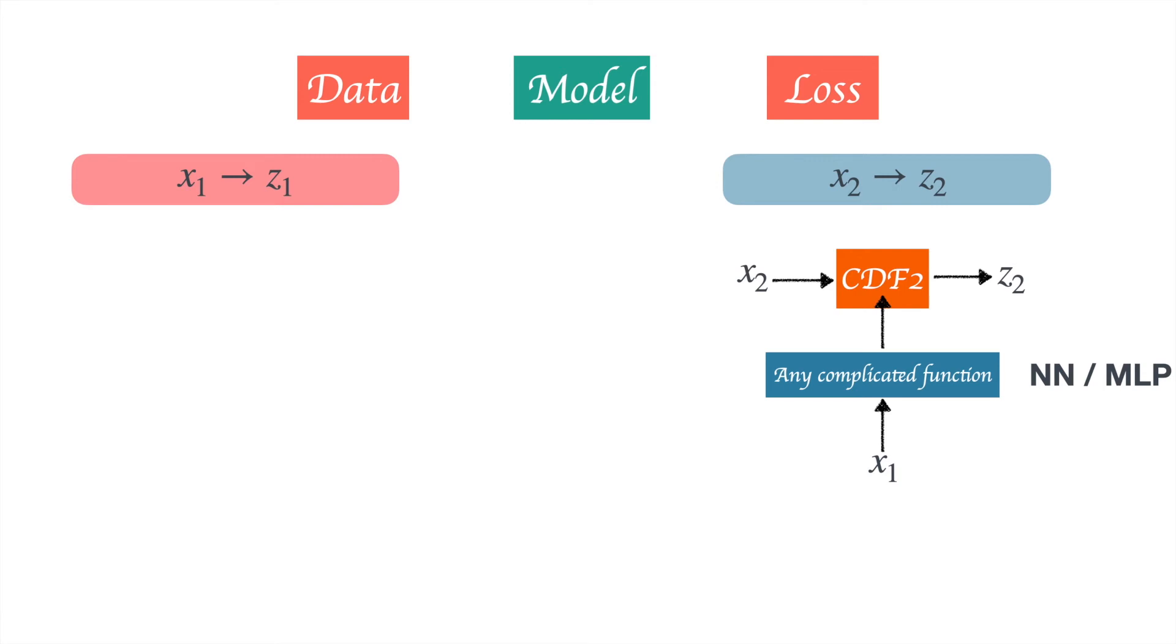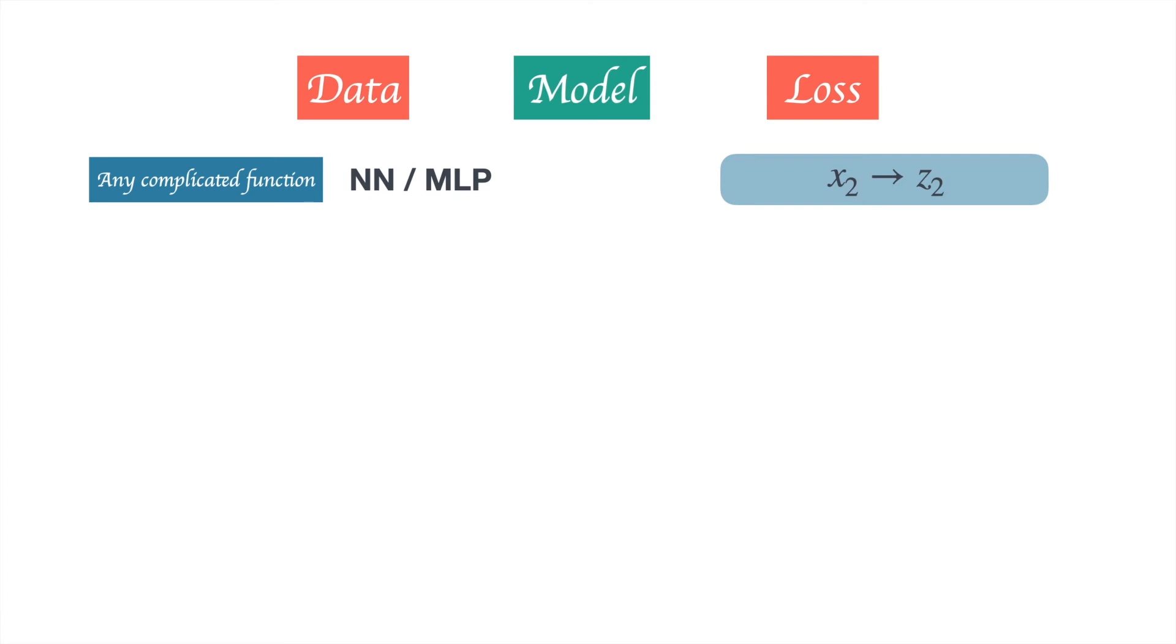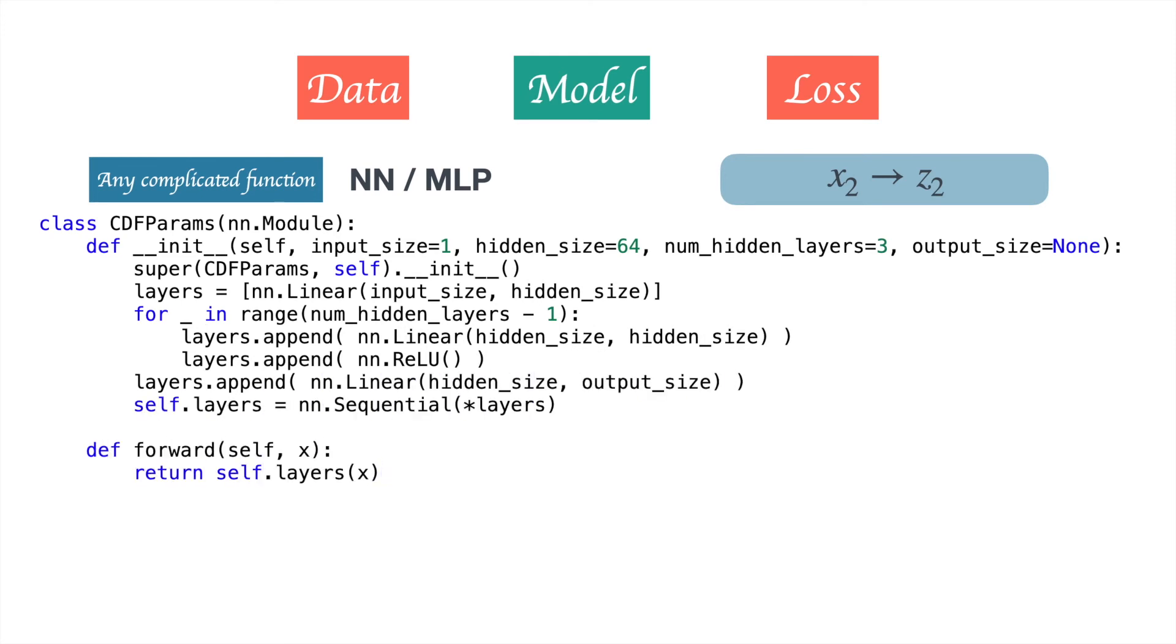The case for mapping x2 to z2 is a bit more interesting because in this case we need to have a function which spits out the variables for CDF2, which then maps x2 to z2. Let's take a look at how this function which takes x1 as input and spits out the parameters for CDF2 looks like. It is basically a very simple neural network which takes x1 as input and its output is going to be the parameters for the CDF2. Its output size is going to be three times the number of components in the CDF, because for each component we need to know the weight, the mu, and the sigma.